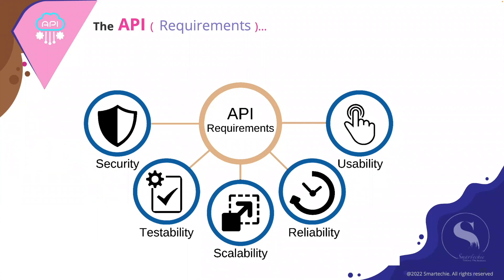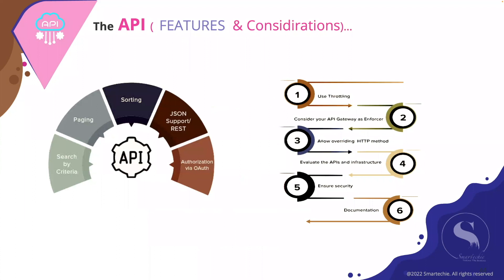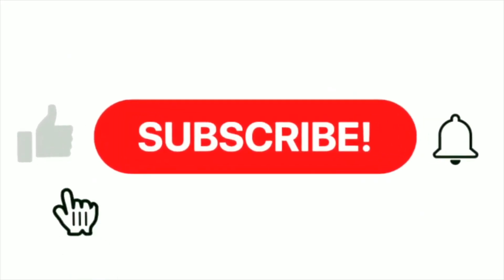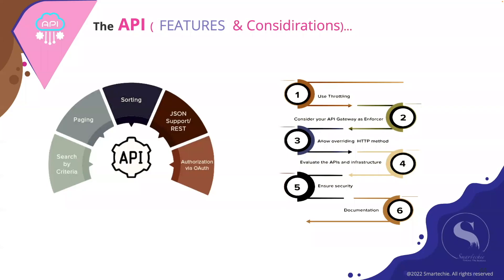Team-level and API-level questions need to be clarified before jumping in. Here are a couple of best practices to consider while building an API: use throttling whenever developing any API, enforce an API gateway to secure your APIs, allow overriding the HTTP method, evaluate the APIs and infrastructure, ensure the utmost security, and of course maintain proper documentation for all your APIs. Whenever you're designing an API, you need to clearly understand the inputs and outputs — what data you are sending to the server and what you are expecting back must be very clear for the user.